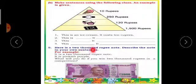Here is a 2000 rupee note. Describe the note in your own sentence. For example, it is a 2000 rupee note, it is pinkish purple.